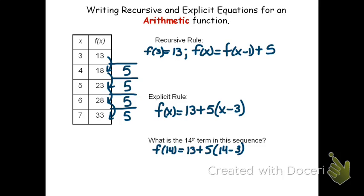And then we see we get f of 14 equals 13 plus 5 times 11. Now 14 minus 3 is really 11. 5 times 11 is 55. And then lastly, we add those together, 13 plus 55 is 68.